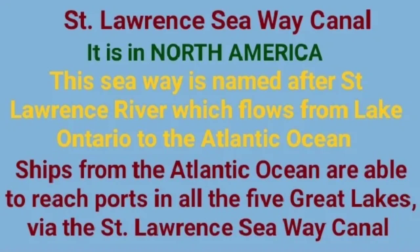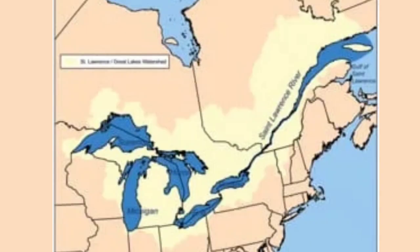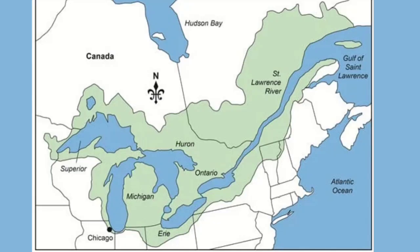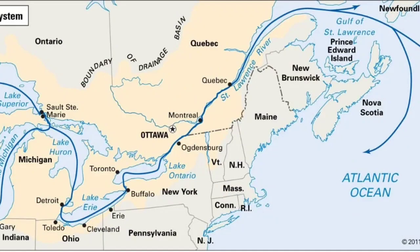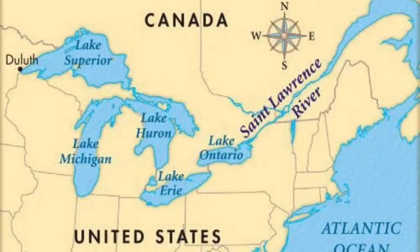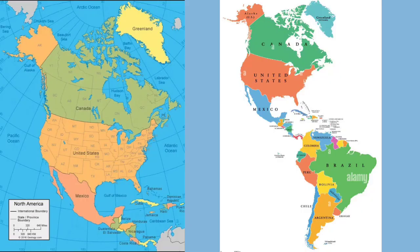In North America, the Saint Lawrence Seaway Canal is the most important inland waterway. It connects the Atlantic Ocean with the inner part of the United States and Canada, linking the Great Lakes of North America — that is, Lake Superior, Michigan, Huron, Erie, and Ontario — with the Atlantic Ocean through the Saint Lawrence River, providing access for ocean liners to the inner part of the North American continent.